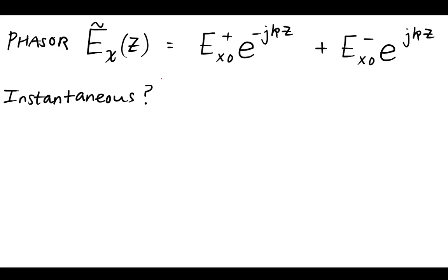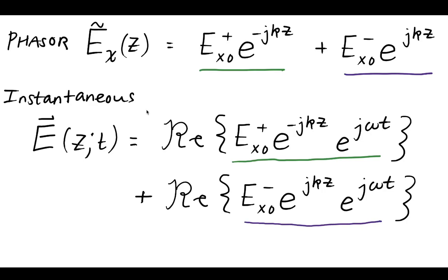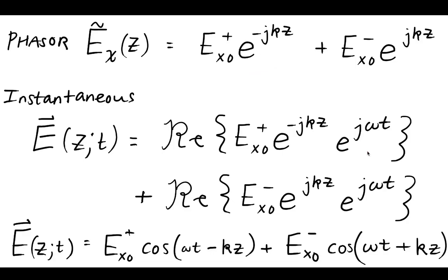We have this phasor form, and this leads us to wonder what the instantaneous form is. To find the instantaneous form, we take the real part of these two expressions and add in the e^(jωt) term. Doing that, we get an instantaneous expression where the cosine wave comes back in. Looking at this, we get a second confirmation of how the waves travel: we have minus kz, which indicates the plus z traveling wave direction, whereas the plus kz indicates a reverse traveling wave — consistent with our study of waves.